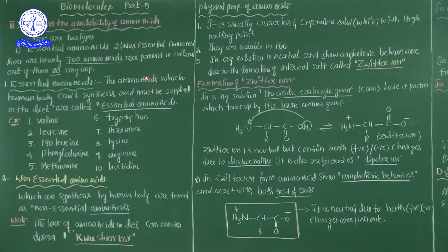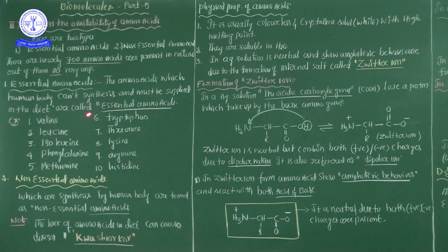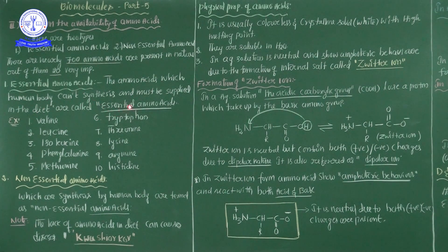Generally there are nearly 700 amino acids present in nature. Out of them, 20 amino acids are very important. The entire nature has 700 amino acids present in plants and animals, but only 20 of them are very important. The first type is essential amino acids — the amino acids which the human body cannot synthesize and must be supplied in the diet are called essential amino acids.